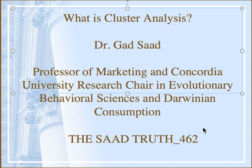Today I thought I would focus on one of these important techniques. In an earlier Saad Truth clip — I think it was Saad Truth 303 — I talked about ways by which one might elicit the importance weights of attributes. For example, if you've got a bunch of attributes defining a car, like the price, the gas efficiency, and the safety record, how would you elicit the importance weights of each of those attributes from consumers? The fourth method discussed is called conjoint analysis, which is a truly indispensable tool. But the technique today I'd like to discuss is another truly important technique called cluster analysis.